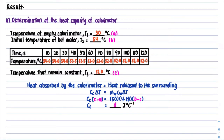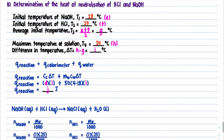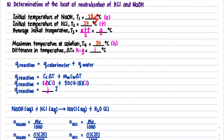Next, Part B: to determine the heat of neutralization of HCl and NaOH. Delta H of neutralization is essentially heat released divided by number of moles of H2O. From the experiment, we need to measure the initial temperature of NaOH and of HCl. Once you have both, calculate the average initial temperature by adding them and dividing by 2.